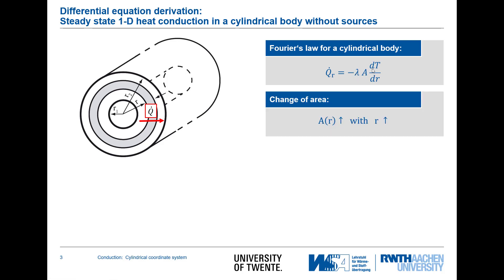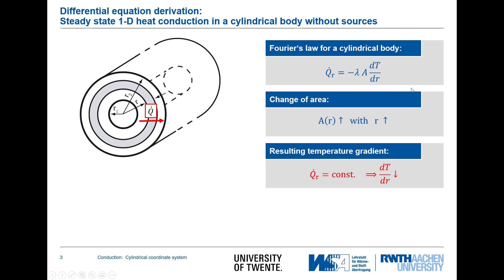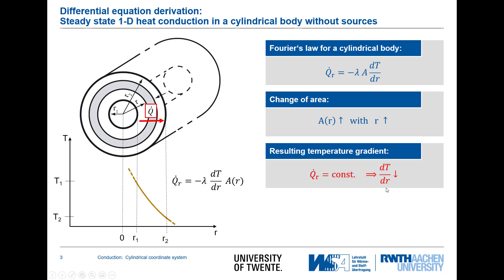In this special case, the area changes with the radius — it increases. So the resulting temperature gradient dT/dr will not be constant as it is for the plane wall. Although the heat transfer Q_r is constant through the wall, the area increases, and as such the temperature gradient dT/dr needs to decrease. As the temperature gradient decreases gradually with increasing radius, we can directly draw a first guess of the temperature profile between T1 (inner) and T2 (outer).